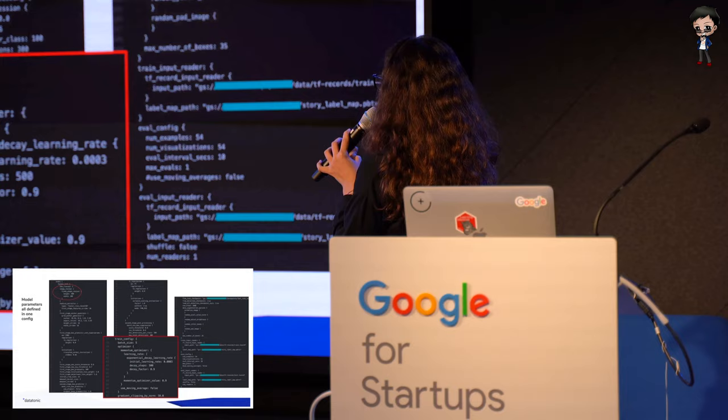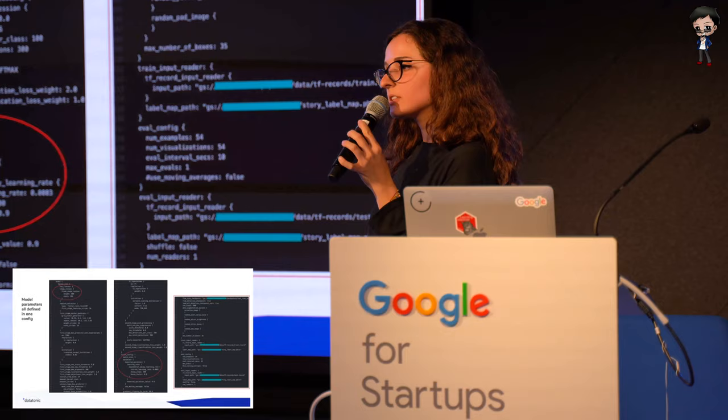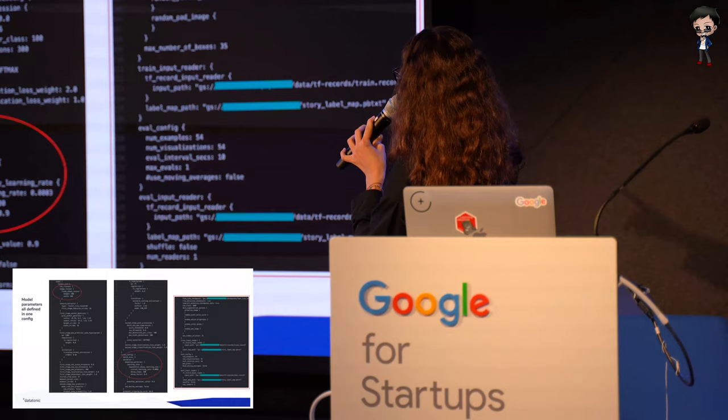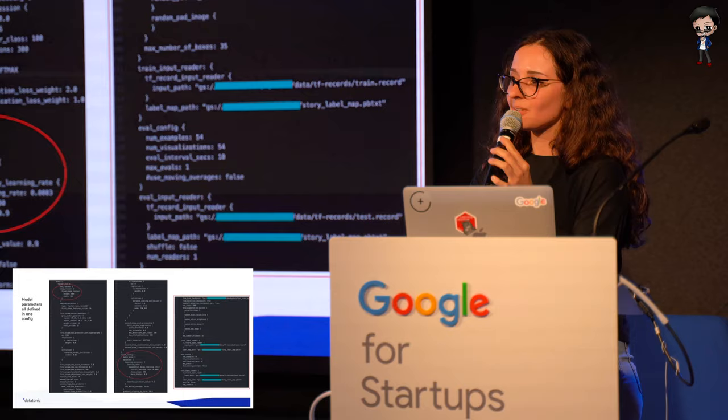Pretty much all of this final box you will need to update — the first section here is very interesting because that's where you define transfer learning: you just redirect to a checkpoint where you have your model that's been pre-trained, and the code will automatically start training from there. Here you can also find some data augmentation steps, and finally where your data is located — your training and your evaluation data. This is really all you need to update to adapt to this use case.